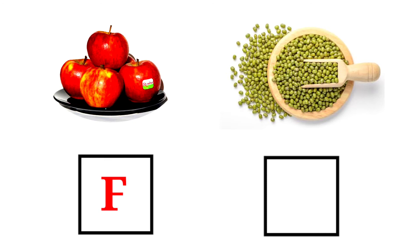Look at the picture. What is this? Green gram. Green gram is a pulse, so we have to put P.